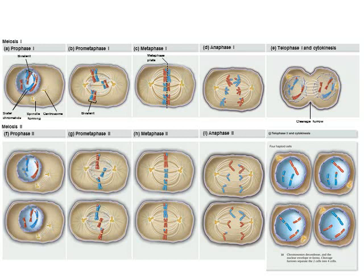Each of the four cells we just created is genetically different from the others, showing lots of genetic variation among our four gametes. This contributes to why you and your siblings look different from each other but share some similar traits — you have different DNA, but also some similar DNA pieces in the gametes that help create you.